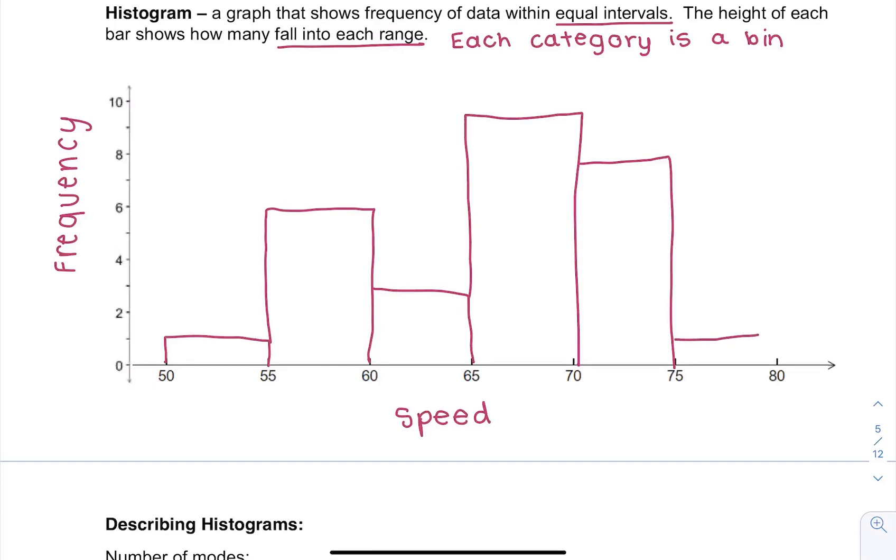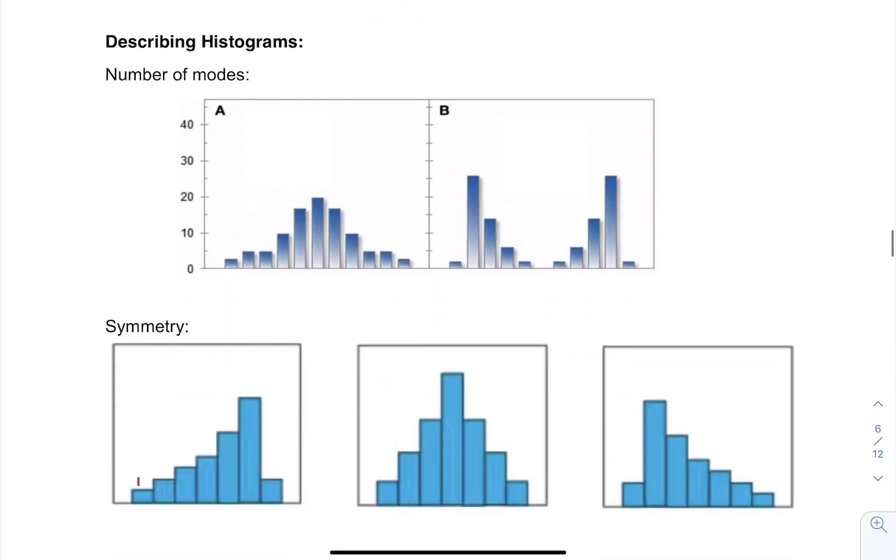So here for eight, and then it drops back down to one. So this graph isn't as great for seeing each individual data point, but it is nice for just seeing an overall shape of different categories. Now we can describe histograms in a number of ways.